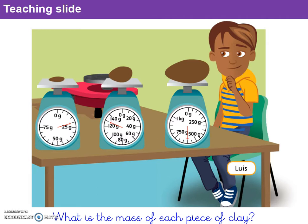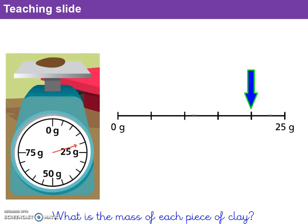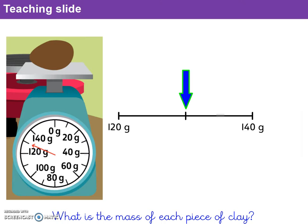Now that I know the value of each interval on all three scales, I can answer question 1b — what is the mass of each piece of clay? I've taken each circular scale and made it into a horizontal line, labeling the same position. For the first scale, each interval is worth 5 grams, and the arrow shows the clay has a mass of 20 grams. For the second scale, each interval is worth 10 grams, and that piece of clay is 130 grams.